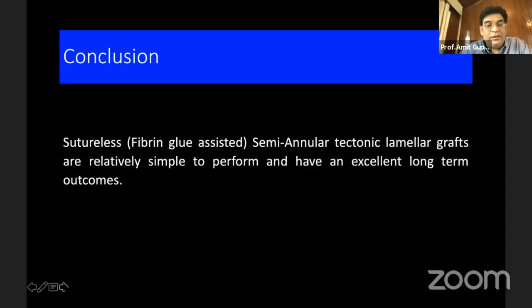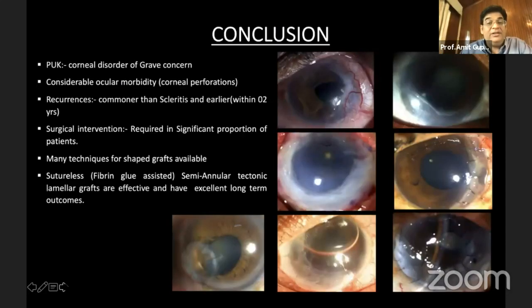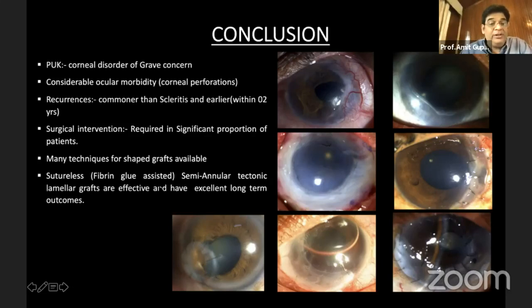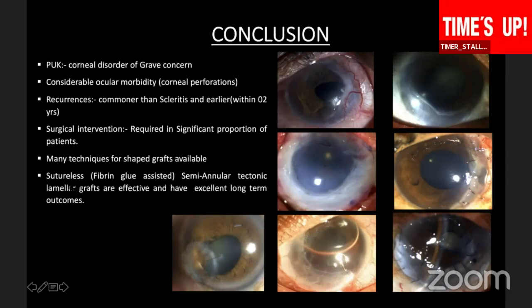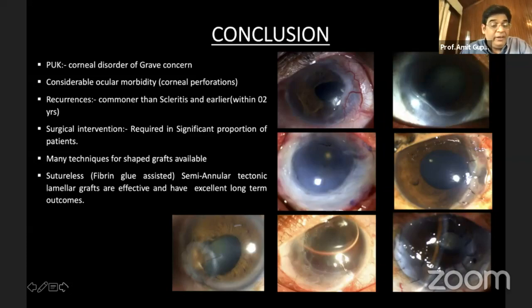To conclude, sutureless or fibrin glue-assisted semi-annular tectonic lamellar grafts are relatively simple to perform and have excellent long-term outcomes, provided we follow all the surgical principles. PUKs are very serious corneal diseases, recurrences are common, and we need to rule out systemic disease. Many techniques are available, and the sutureless semi-annular tectonic grafts — banana grafts — are very effective with excellent long-term outcomes. Thank you very much.